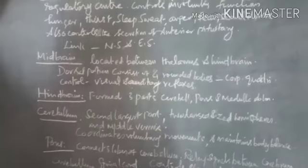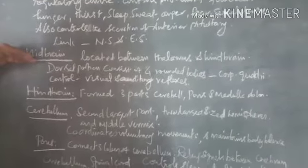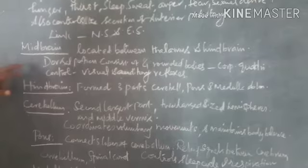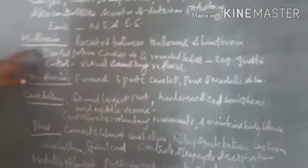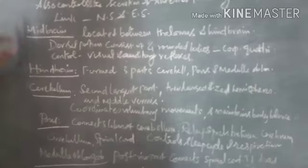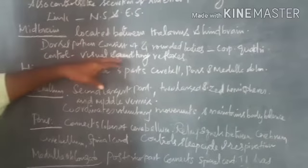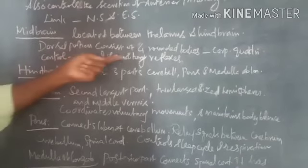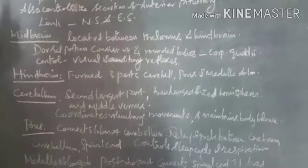The forebrain is followed by the midbrain, which is located between the thalamus and hindbrain. The dorsal portion consists of four rounded bodies called the corpora quadrigemina. The midbrain controls visual and auditory reflexes because the optic and auditory lobes are present in the midbrain.